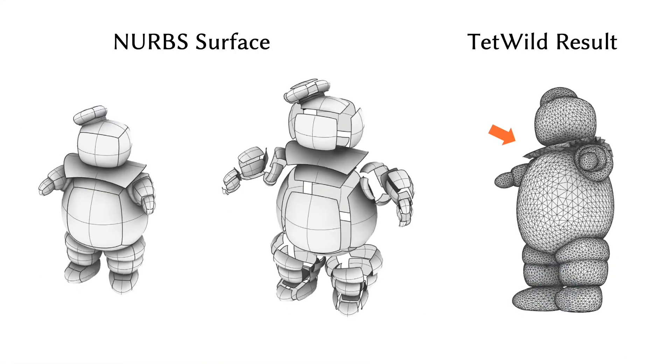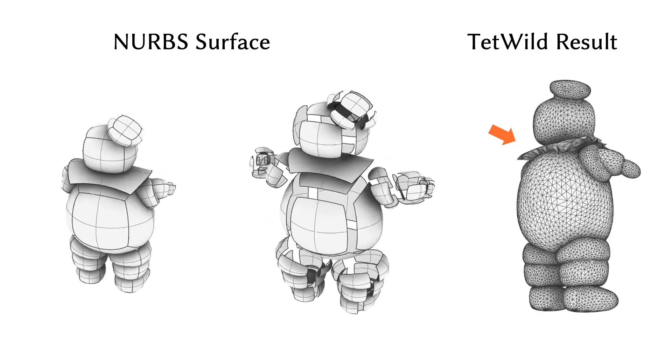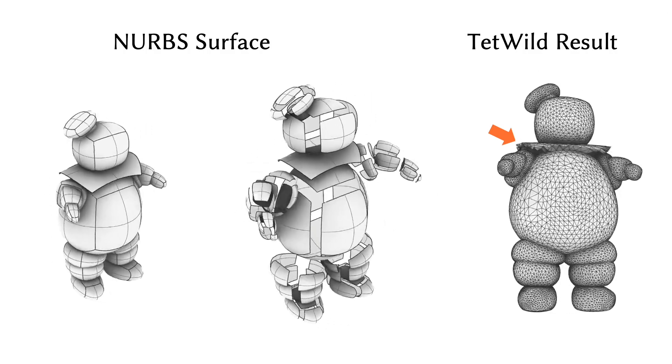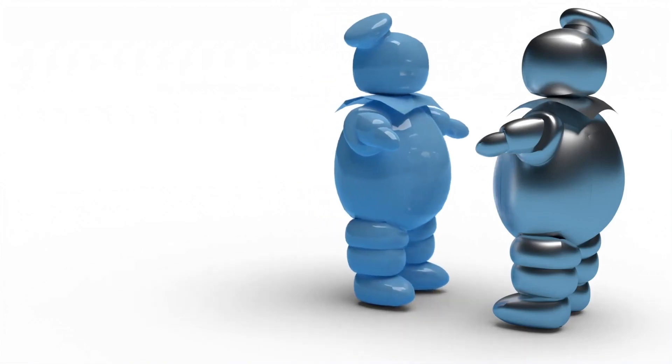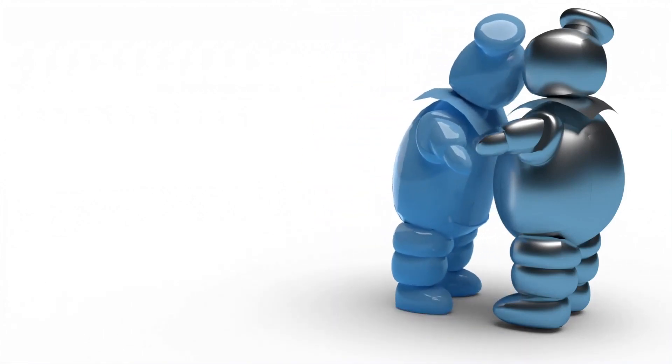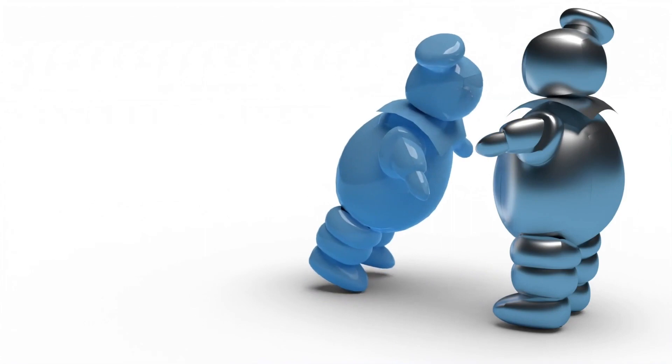Our method doesn't support thin shells as such, but it gracefully incorporates them into the volumetric simulation and doesn't break their geometry. This means that we can produce plausible animations for this challenging geometry, while preserving the model's appearance.